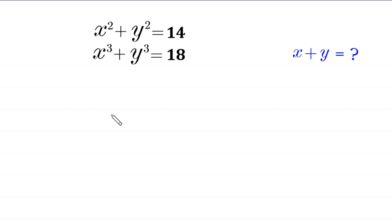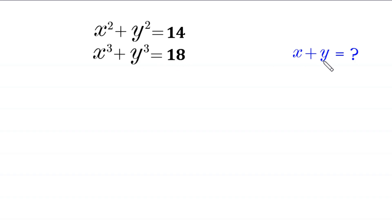Hello everyone, welcome to solving this very nice system of equations: x squared plus y squared is equal to 14, and x cubed plus y cubed is equal to 18. Our job is to find all possible values of x plus y. Let's call the first equation 1 and the second equation 2.